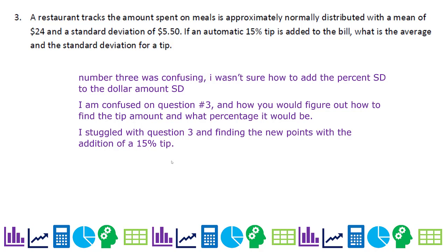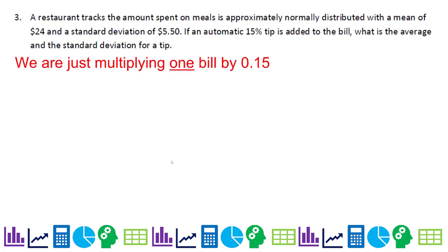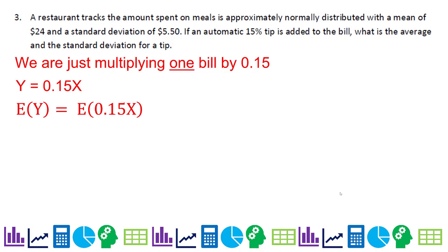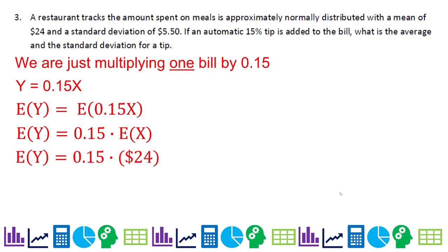Problem 3: a restaurant tracks the amount spent on meals, approximately normally distributed with a mean of $24 and a standard deviation of $5.50. If an automatic 15% tip is added, what is the average and standard deviation for the tip? We're calculating the tip, so y = 0.15x. The expected value is 0.15 × 24, giving an expected tip of $3.60.